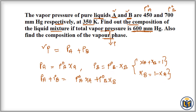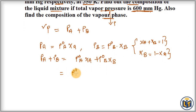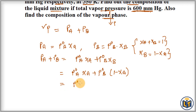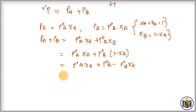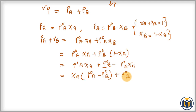This relationship helps us simplify the expression. Substituting XB = 1 − XA, we get P°A · XA + P°B · (1 − XA). Expanding the bracket: P°A · XA + P°B − P°B · XA. Taking XA as common: XA(P°A − P°B) + P°B = P, where P is the total vapor pressure of the solution.